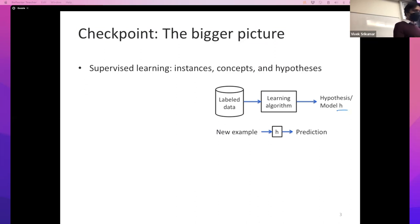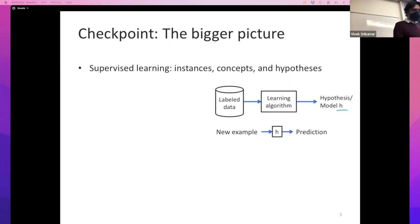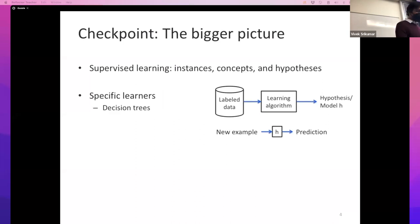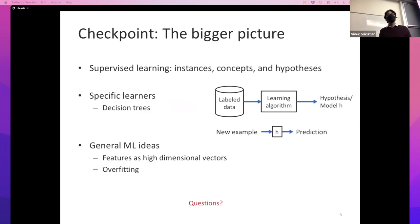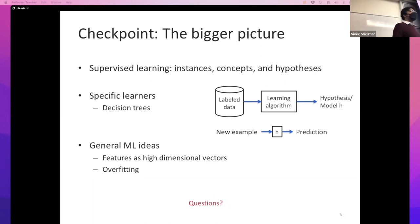The hypothesis itself is a function that takes a new, possibly unseen example and gives you a prediction. In particular, we have seen one class of learning algorithms that produces decision trees - that's the ID3 algorithm. Along the way we've also encountered a couple of more general machine learning ideas: one is the idea that you can use features as high-dimensional vectors, and the other, which we just discussed, is the idea of overfitting.